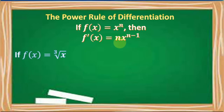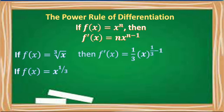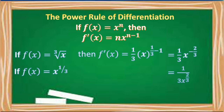If we have f of x is equal to the cube root of x, we change this to exponential form: f of x is equal to x raised to 1 third. Applying the power rule, f prime of x is equal to 1 third times x raised to 1 third minus 1, which is equal to 1 third x raised to negative 2 thirds. To change the negative exponent to a positive exponent, we move x raised to negative 2 thirds to the denominator, giving us 1 divided by 3 times x raised to 2 thirds. For our final answer, we have 1 over 3 times the cube root of x squared.